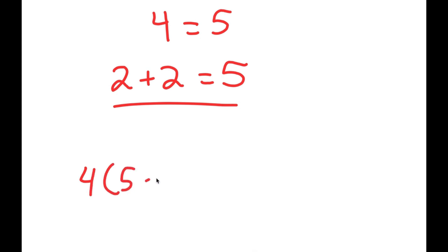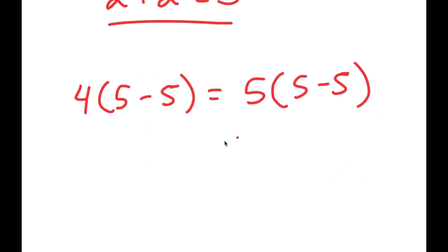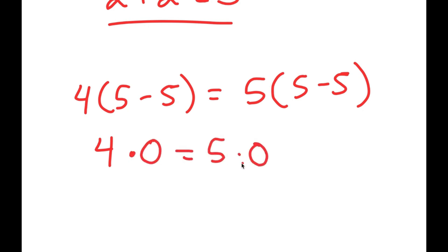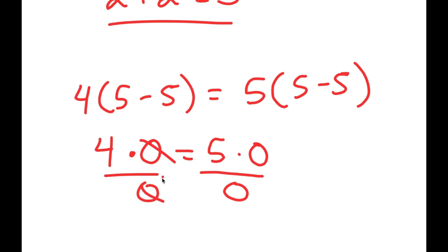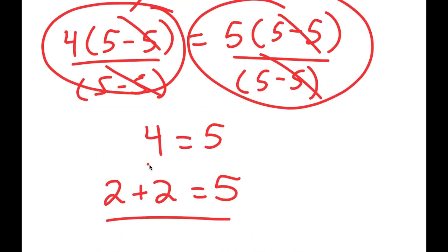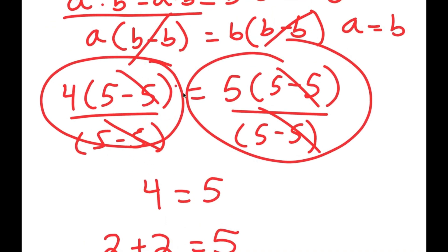I have 4 times 5 minus 5 is equal to 5 times 5 minus 5. Instead of just dividing both sides by 5 minus 5, what is 5 minus 5? 5 minus 5 is equal to 0. So this is basically 4 times 0 is equal to 5 times 0. If I try to divide both sides by 0, well, 0 divided by 0 is not equal to 1 — that's indeterminate. So we can't actually cancel these out, because canceling implies that 0 divided by 0 is equal to 1, which is wrong. That's where I made the mistake — dividing by 0 is against the laws of mathematics.